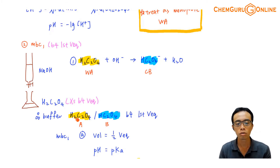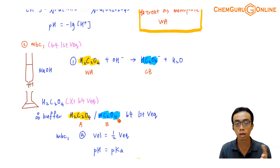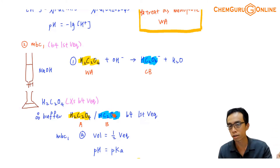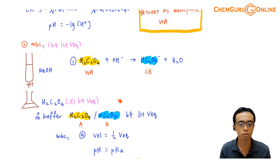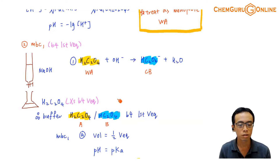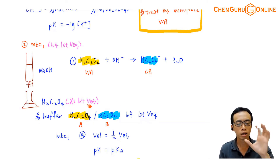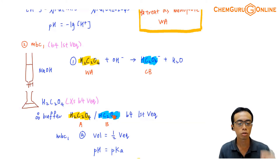H₂C₂O₄ is an acid with Ka value Ka1. HC₂O₄⁻ is also an acid — the second acid — with Ka value Ka2. So which Ka value should I use for this buffering system? What we have to ask ourselves is: inside this buffering system, who is the acid and who is the base? H₂C₂O₄, with the additional H⁺, acts as the acid. HC₂O₄⁻ functions as the base. So the Ka value I should be focusing on is the Ka value for H₂C₂O₄.